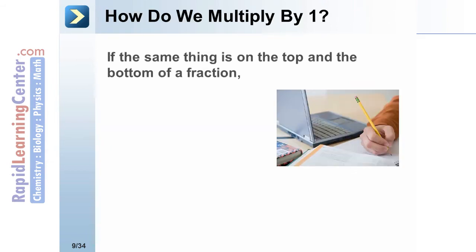Any time a fraction contains things that are equal on top and the bottom, they cancel out and become one.